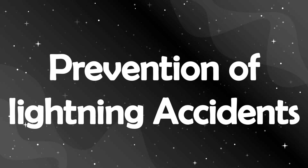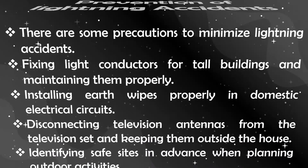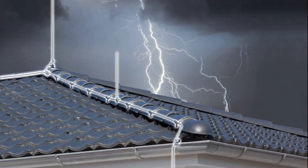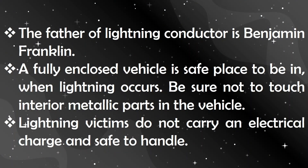Let's see about prevention of lightning accidents. There are some precautions to minimize accidents caused by lightning: fixing lightning conductors for tall buildings and maintaining them properly, installing earth wires properly in domestic current circuits, disconnecting all domestic electrical appliances, and disconnecting television antennas when lightning occurs. Identify safe sites in advance when planning outdoor activities.